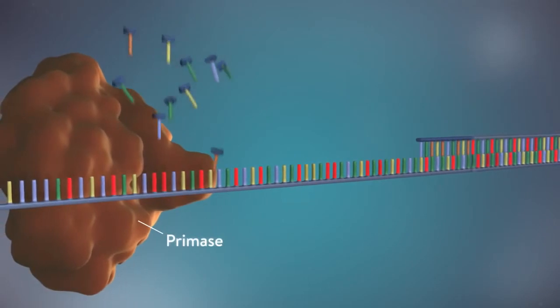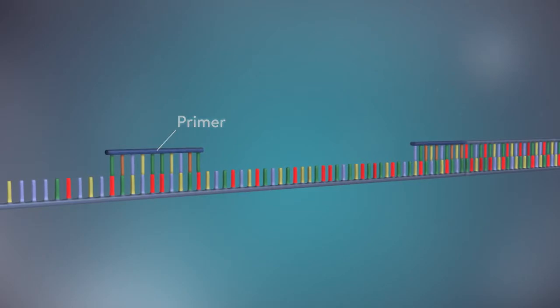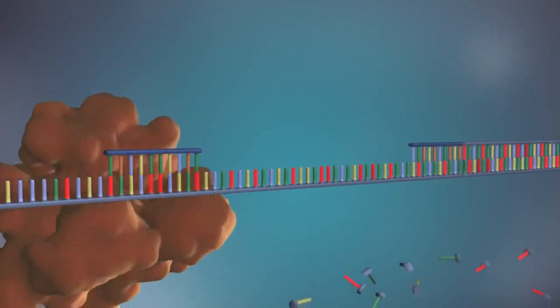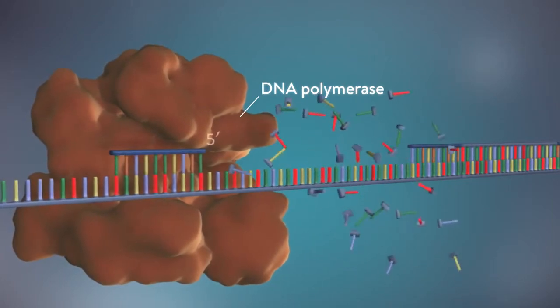Each fragment is started with an RNA primer. DNA polymerase then adds a short row of DNA bases in the 5' to 3' direction.